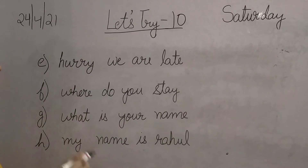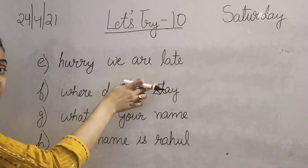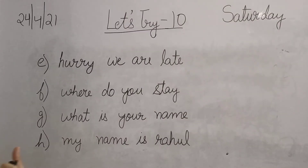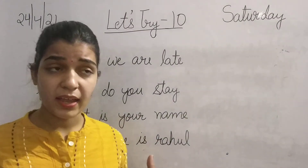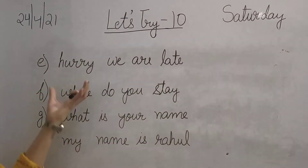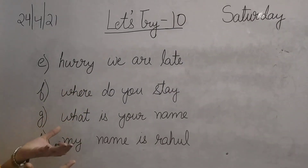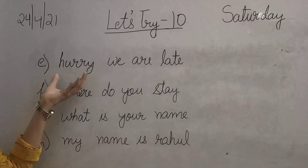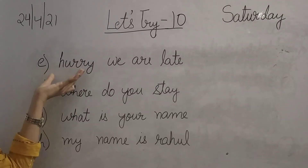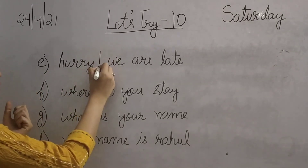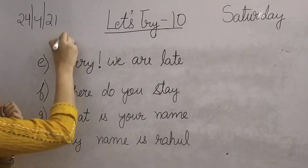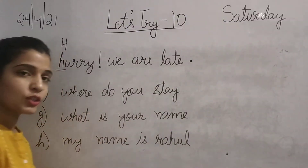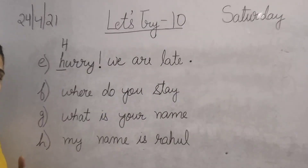The next sentence is: 'Hurry! We are late.' Someone is in a hurry — koyi bahut jaldi mein hai. When someone is excited or in a hurry, we use the exclamation mark. So after 'Hurry' we put an exclamation mark. The first letter should be capital, and at the end we will put a full stop.